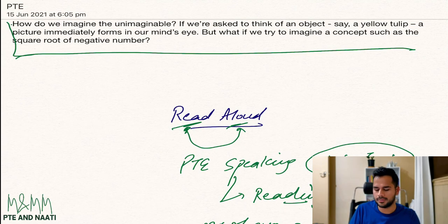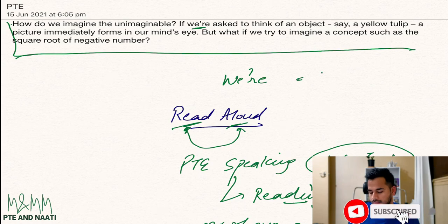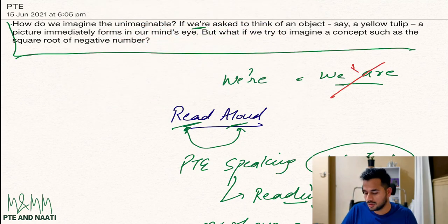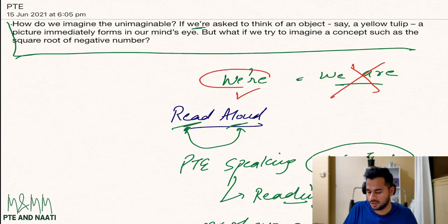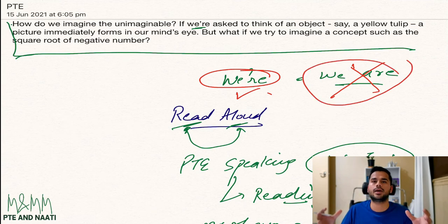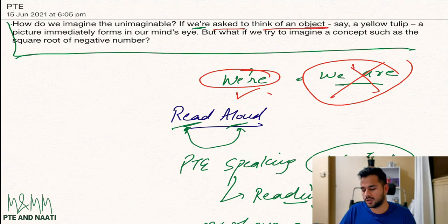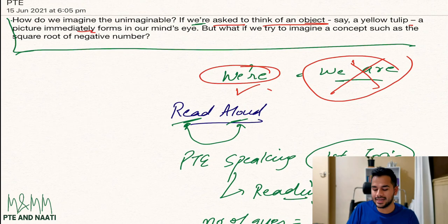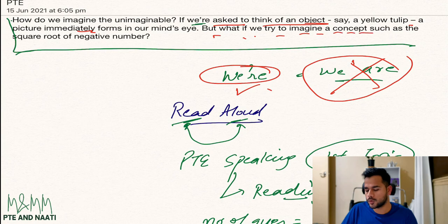The paragraph says: 'How do we imagine the unimaginable? If we are asked to think of an object, say a yellow tulip, a picture immediately forms in our mind's eye. But what if we try to imagine a concept such as the square root of negative number?' First, many people speak the word 'we're' wrong — it's not stretched out as 'we are,' it is 'we're.' If the text has an apostrophe in a contraction, we speak it exactly as written, not expanding it.